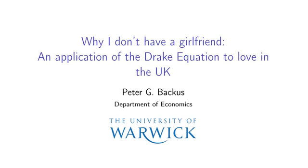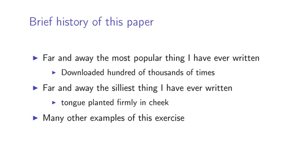As you're interested in, my name is Peter Bacchus, and I wrote a paper a few years ago called Why I Don't Have a Girlfriend, an application of the Drake Equation to Laws in the UK. To give you a brief history of this paper, this is far and away the most successful thing I have ever written or will ever write in my entire life. It's been downloaded hundreds of thousands of times, and for an academic to have a paper downloaded that many times, it must be something that is profoundly influential and may even lead to a Nobel.